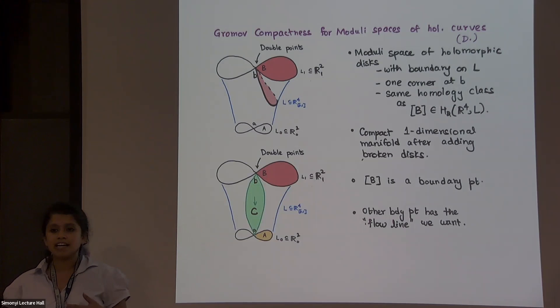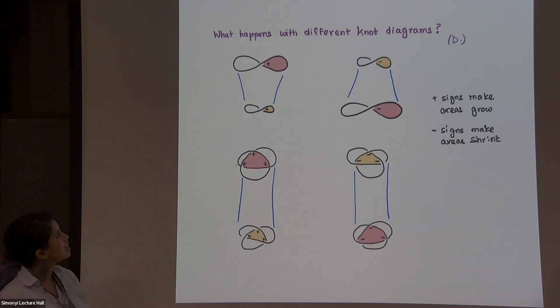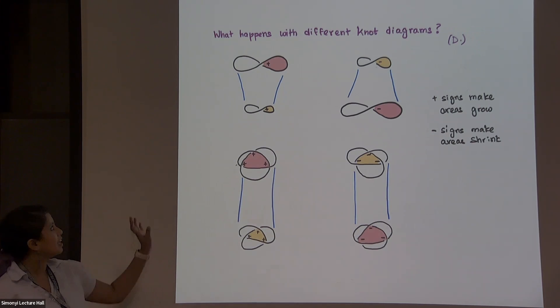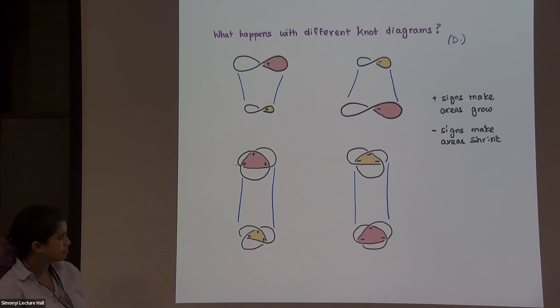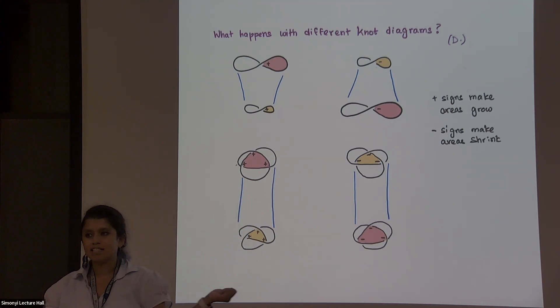So once you find this, you can make statements about which areas are growing. And you can make that. So there was one of the questions, what happens if you change the knot diagrams? And you can change the crossings, turn them into trefoil. And in this picture, all of the pink areas are bigger than the yellow areas. And what you can see is that if I change the crossings from whatever I call plus to what I call minus, the direction things are increasing changes. So plus signs are making the areas grow and minus signs are making them shrink. That's sort of the model.